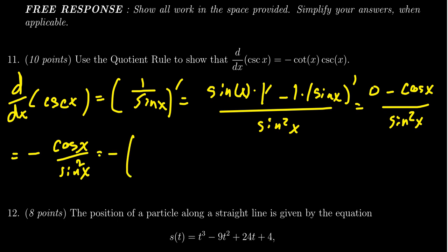So if we factor this thing, we're going to get negative cosine x over sine x. That's a cotangent. And then we times that by 1 over sine of x.